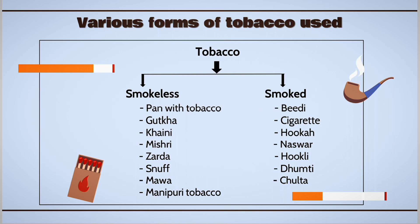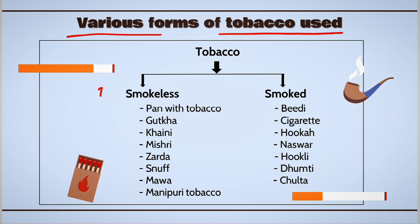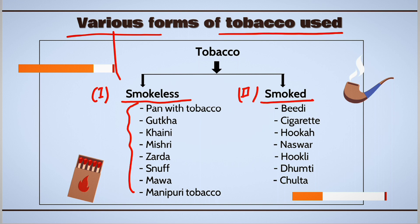Let's see what are the various forms of tobacco used by various persons. Tobacco can be broadly divided into two categories: the first one is the smokeless form of tobacco, and the second one is the smoked form of tobacco, with various examples of these forms shown here.